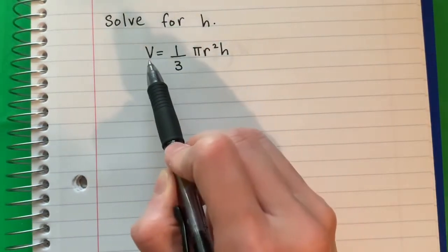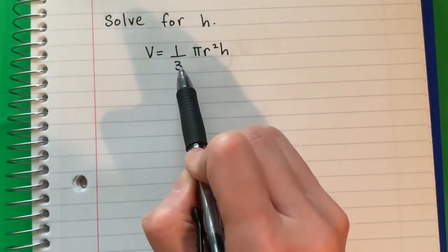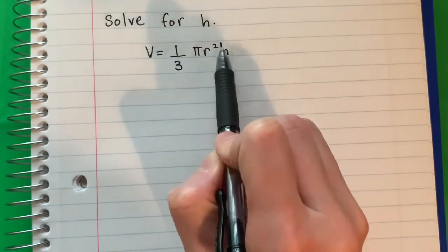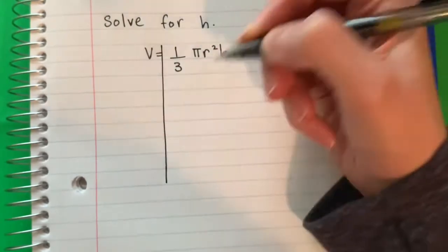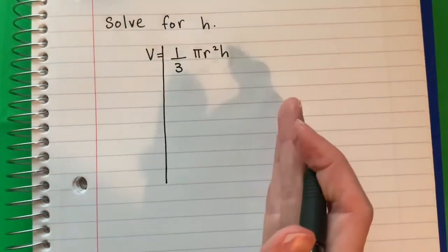Solve for h in the equation V equals 1/3 π r squared h. First, I'm going to put a line on my equal sign to separate the left and the right.